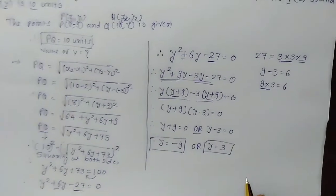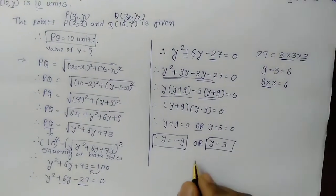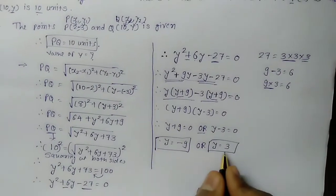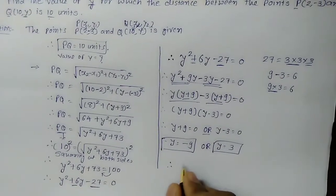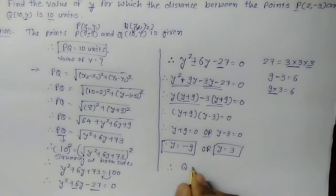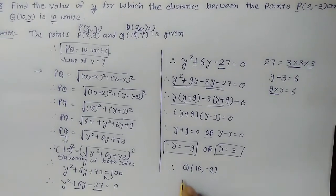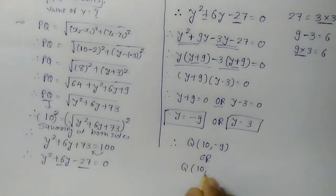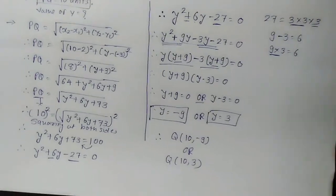What has been asked in the question? Find the value of Y. So the value of Y is either -9 or 3. Therefore Q would be the point (10, -9) or (10, 3). This is how we find the value of Y. Thank you.